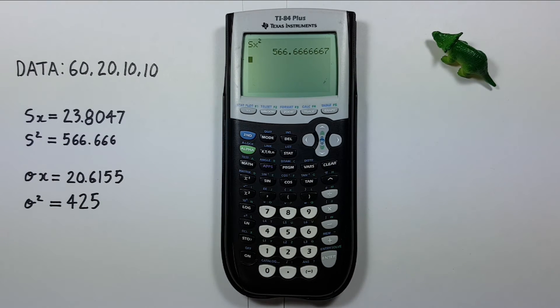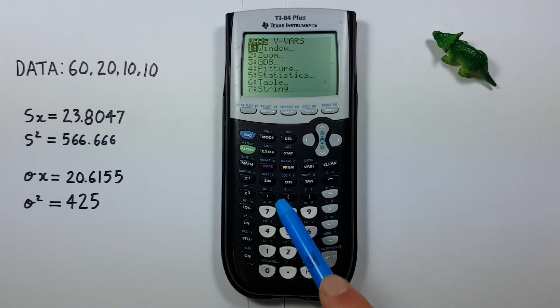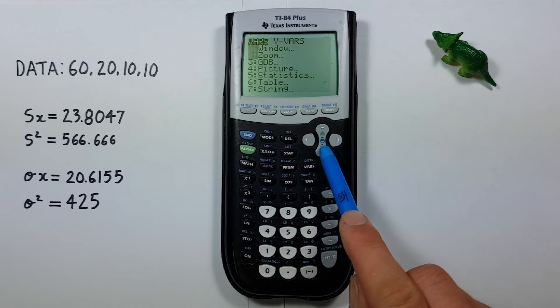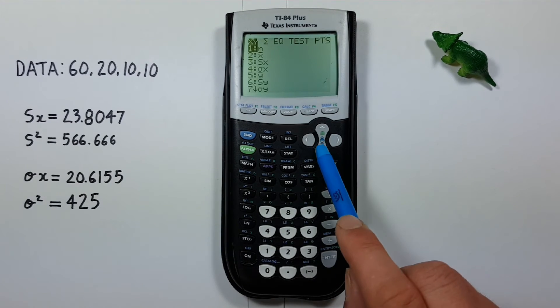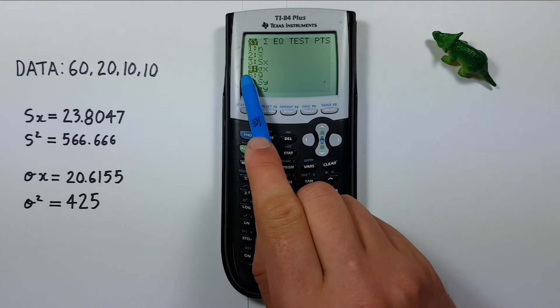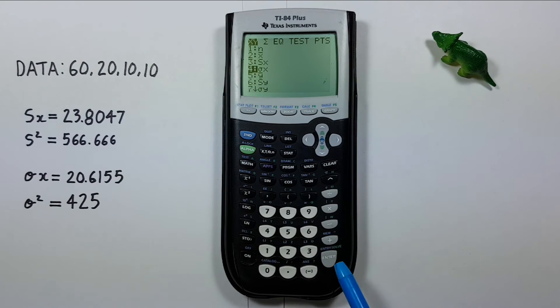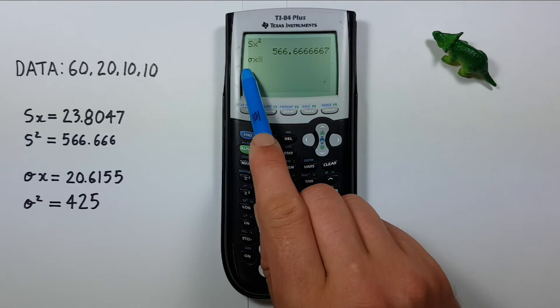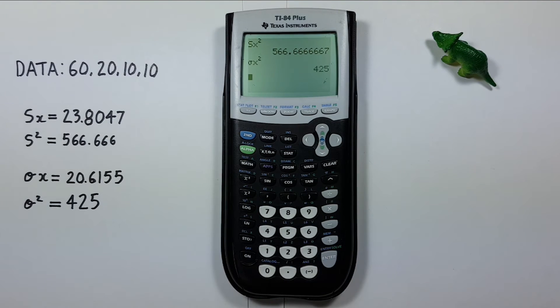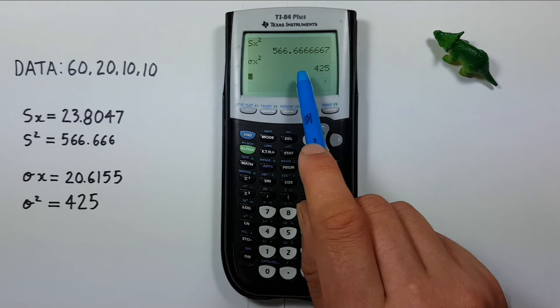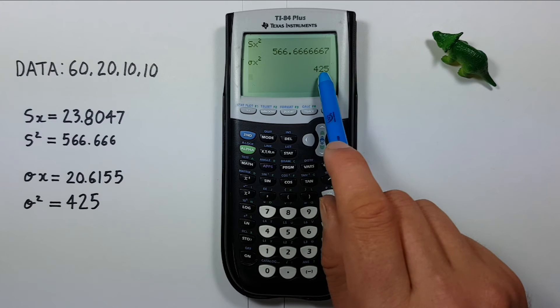We can also get the population standard deviation and population variance this way, by going to the VARS, scrolling down to number 5 or we can just press 5, selecting the population standard deviation so that it appears on our screen, and then squaring this and pressing ENTER. And we can see we get a variance of 425.